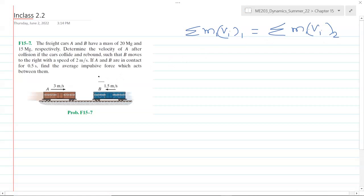The freight cars A and B have a mass of 20 Mg and 15 Mg, so Mg here stands for megagram. That's 20 times 10^6 grams, but we need to substitute the unit in kilograms, so this is 20 times 10^3 kilograms and 15 times 10^3 kilograms.